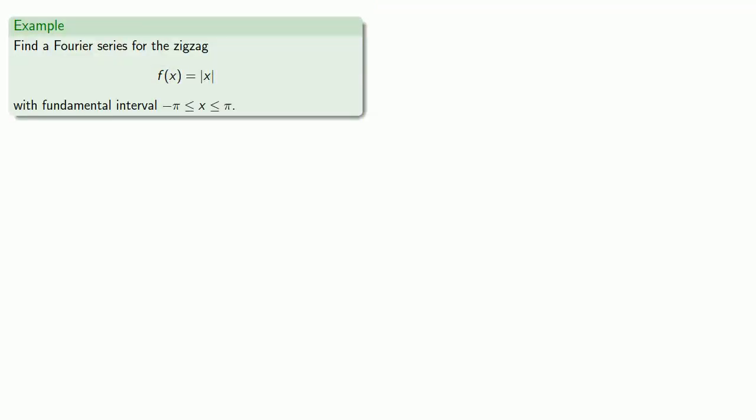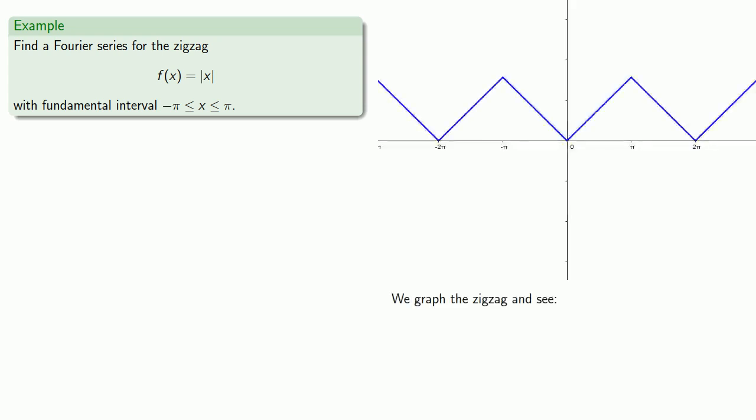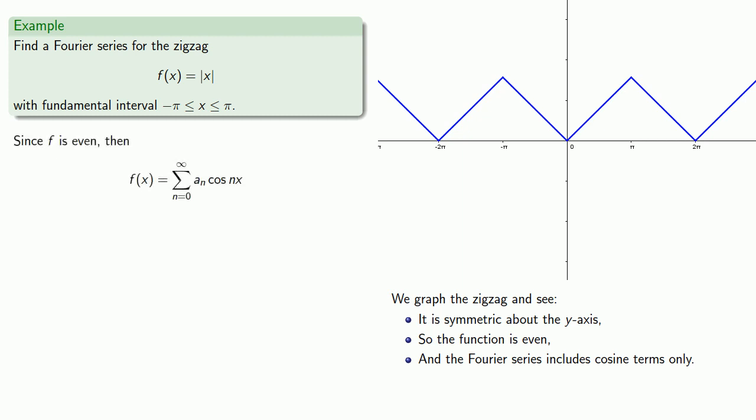For example, let's find a Fourier series for the zigzag, which is just the absolute value of x with fundamental interval minus π to π. We'll graph this function, and what that requires is taking our absolute value of x graph and repeating it over and over again. We see that this graph is symmetric about the y-axis, so the function is even, and that means the Fourier series includes cosine terms only.